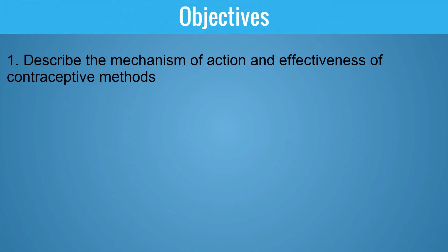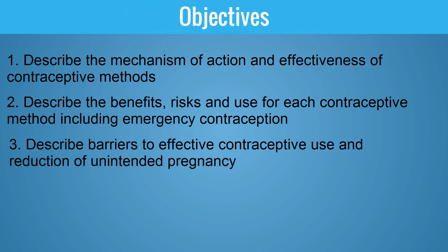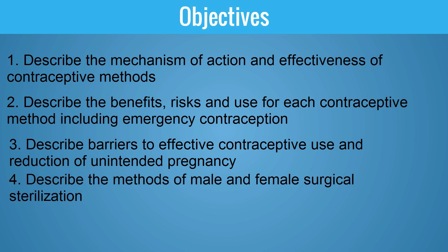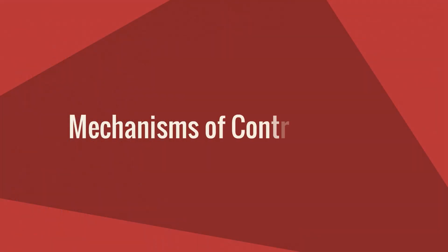The objectives of this video are to describe the mechanism of action and effectiveness of contraceptive methods, describe the benefits, risks, and use for each contraceptive method including emergency contraception, describe barriers to effective contraceptive use and to reduction of unintended pregnancy, describe the methods of male and female surgical sterilization, and explain the risks and benefits of female surgical sterilization procedures.